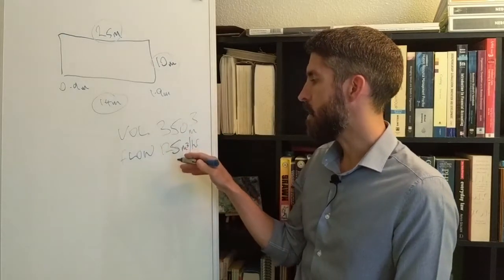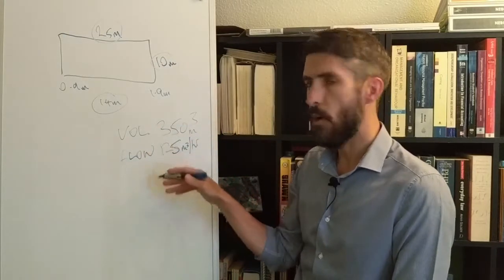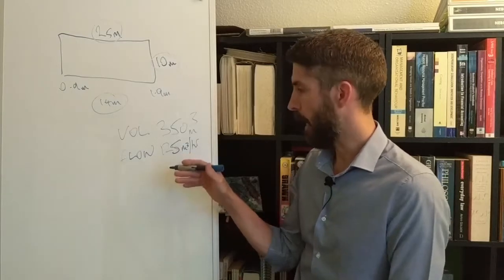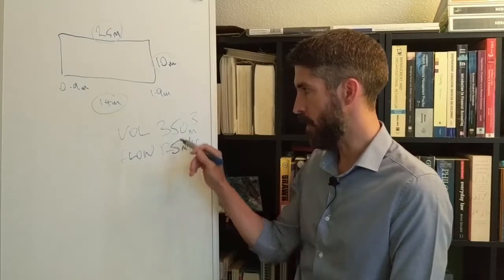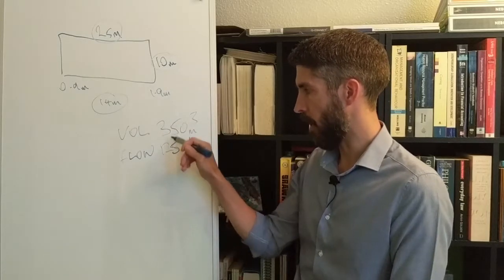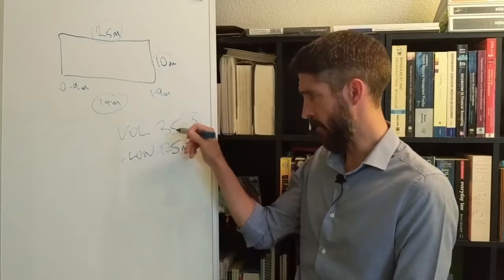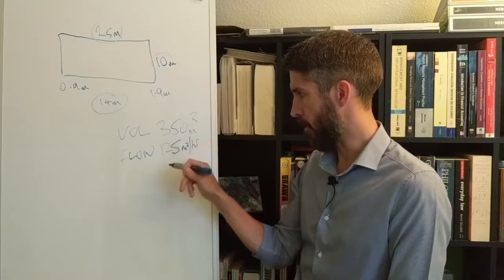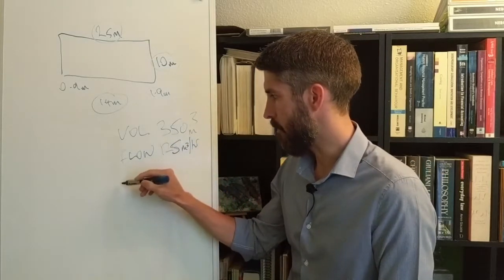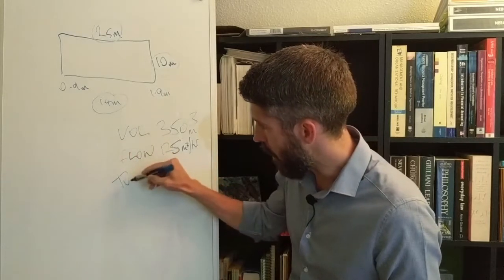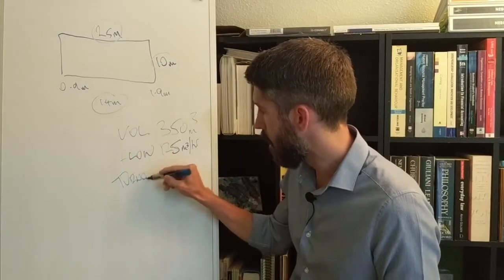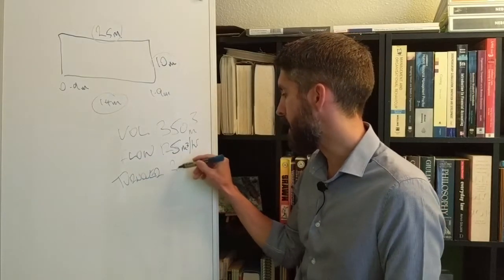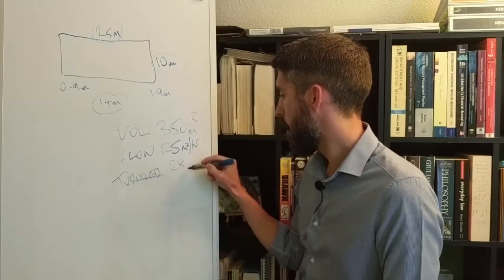What you do is once you know your volume and you know your flow rate, you've got the information you need now in order to work out the turnover time. All you do is you divide the one by the other. So 350 cubic meters divided by 125 cubic meters per hour would give you a turnover of 2.8 hours.